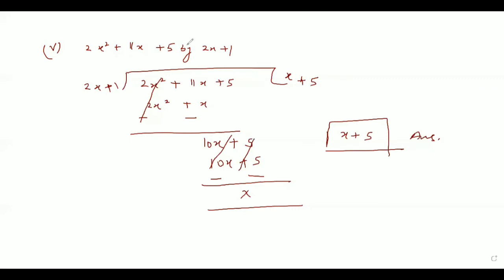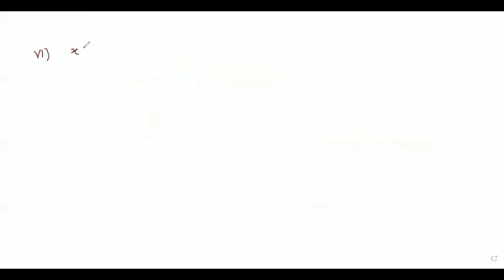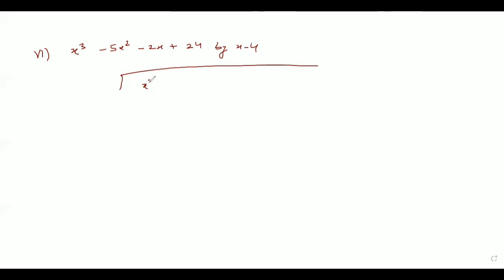Now let's come to the last part, which is the sixth part of question number 3. The sixth part says x cubed minus 5x squared minus 2x plus 24, divided by x minus 4. So we write x cubed minus 5x squared minus 2x plus 24 divided by x minus 4.